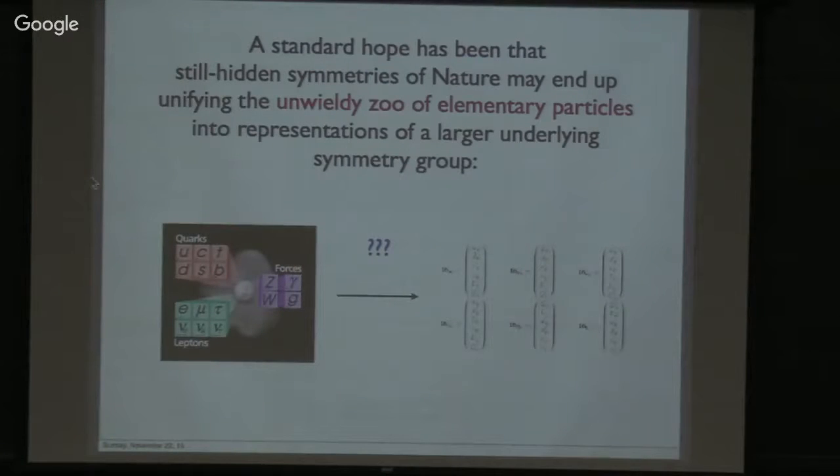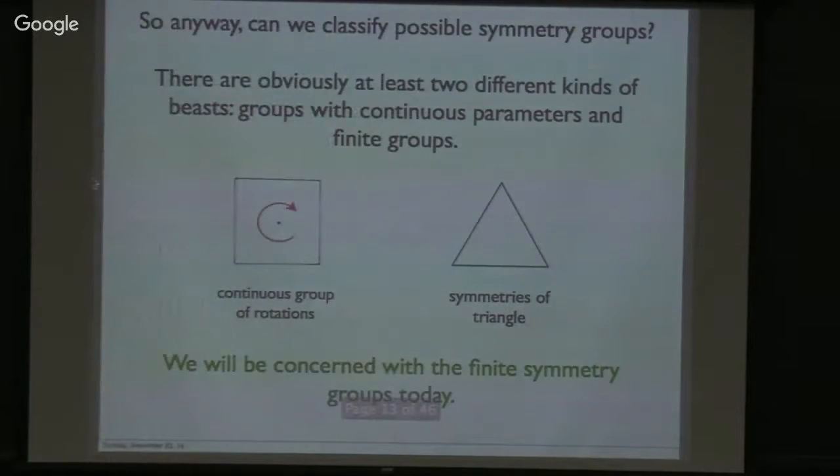Again, that's a very prosaic example. There are much fancier examples. A standard hope from my youth was that still hidden symmetries of nature might end up unifying this sort of increasingly messy picture into just one big rotationally symmetric multiplet of a big enough group. It so happens that if you add up all the particles here in the right way, the number 16 appears and suggests it's a single group SO10. That's an old idea. It hasn't yet borne fruit. But we can hope that it will. So anyway, the study of these symmetries has played an important role in both particle and condensed matter physics. So anyway, can we classify the possible groups and see if there are interesting examples that might play well with other areas of physics?